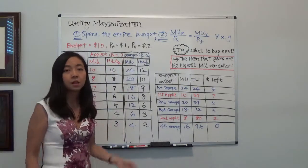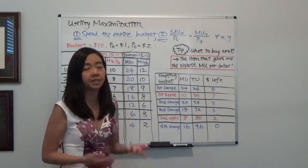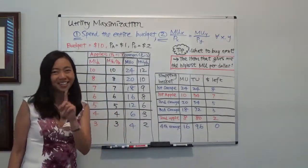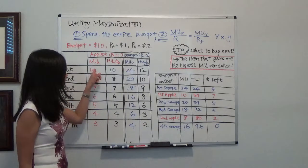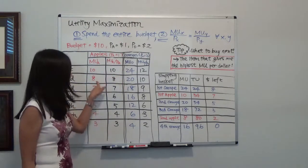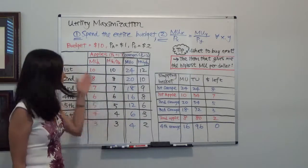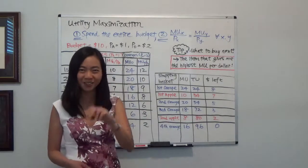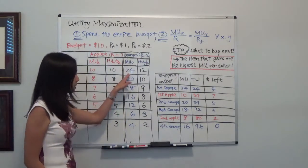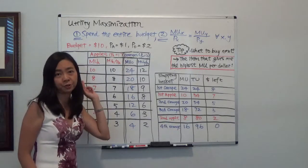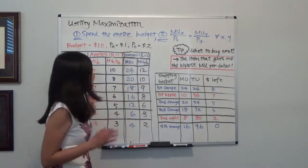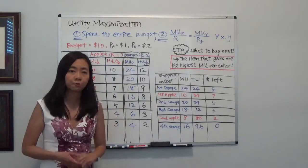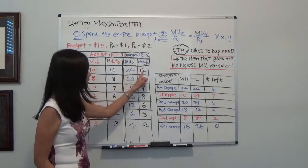What we need to do first is calculate marginal utility per dollar. The price of an apple is $1, so marginal utility per dollar is just 10 divided by 1, 8 divided by 1, and so on. For oranges, because the price is $2, you divide the marginal utility — 24 for the first orange — by 2. So the marginal utility per dollar for the first orange is 24 divided by 2, which gives you 12.